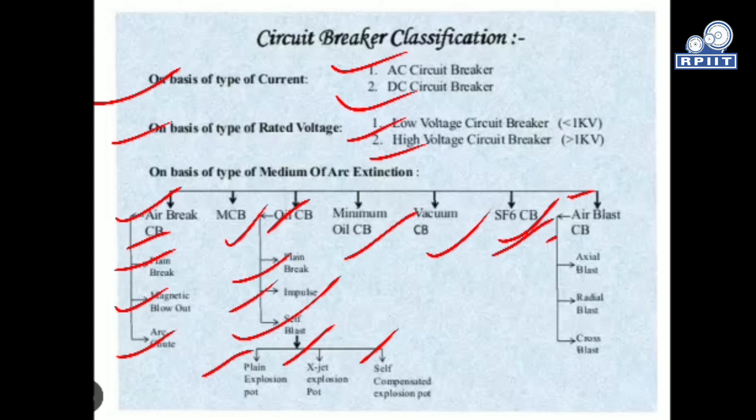The air blast circuit breaker uses air as the medium for arc quenching. Depending on how air is supplied at the inlet and the configuration of the circuit breaker, it can be classified as axial blast, radial type blast, or cross blast circuit breaker.